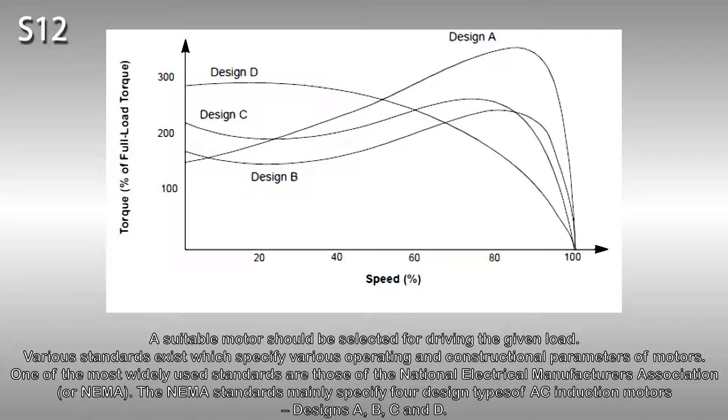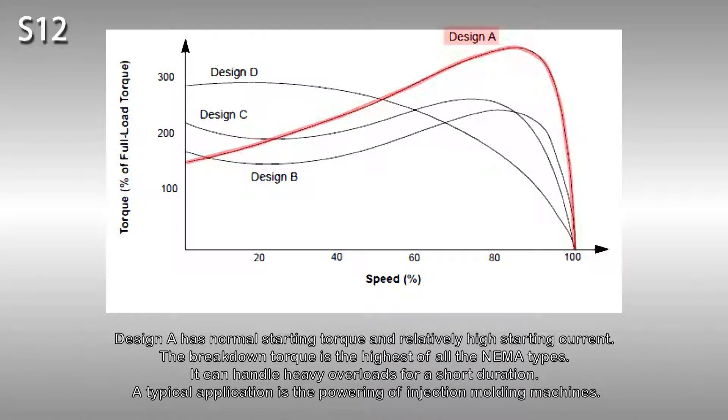The NEMA standards mainly specify four design types of AC induction motors: designs A, B, C and D. Design A has normal starting torque and relatively high starting current. The breakdown torque is the highest of all the NEMA types. It can handle heavy overloads for a short duration. A typical application is the powering of injection molding machines.